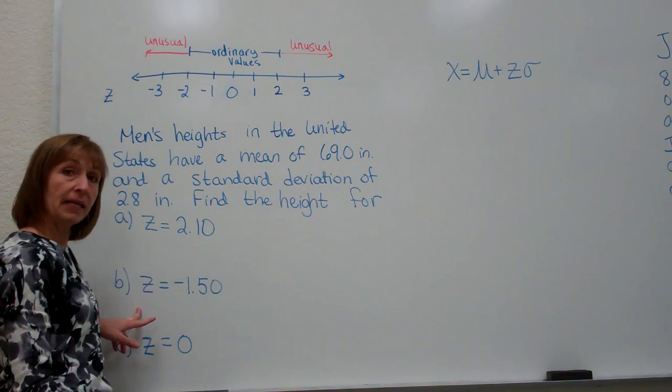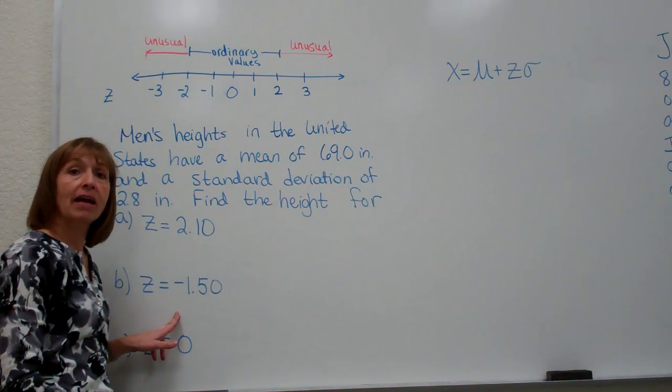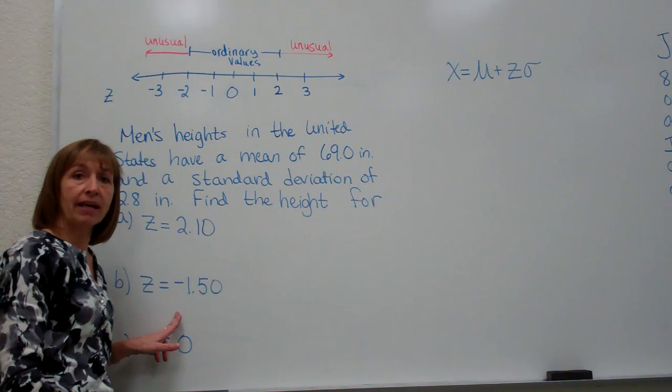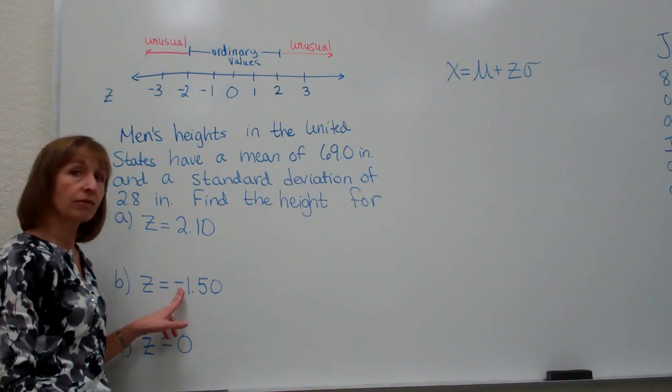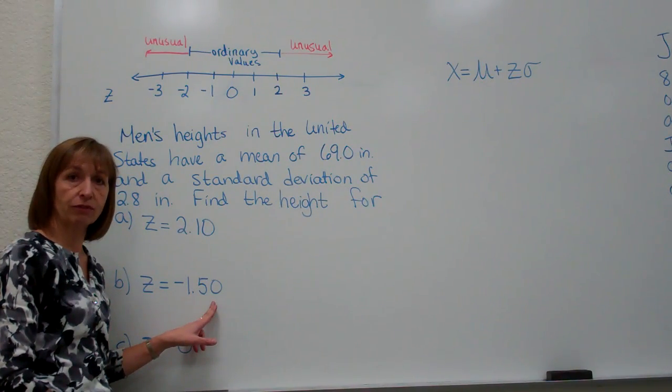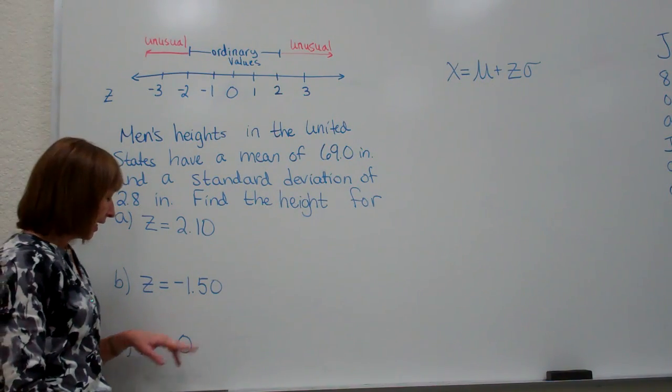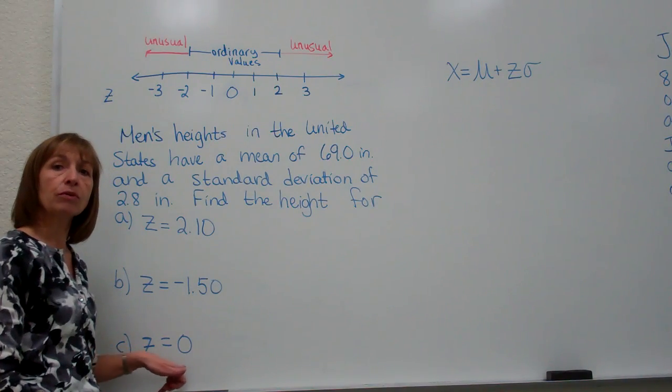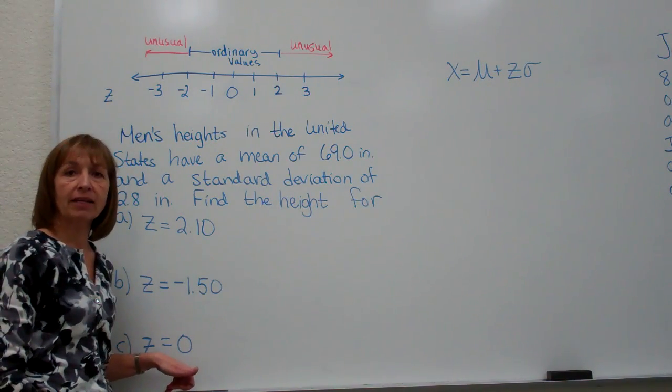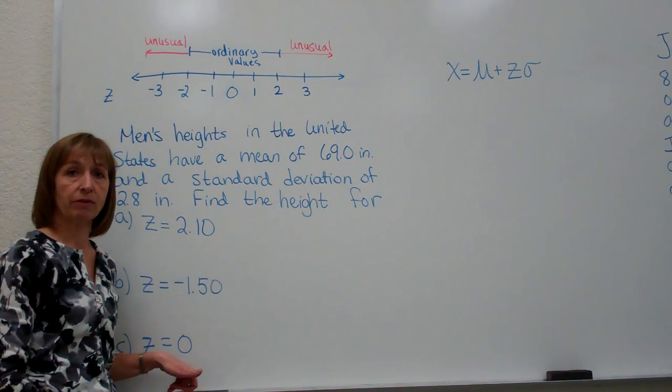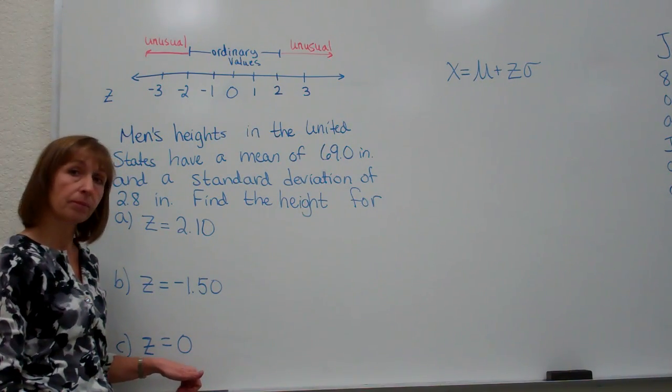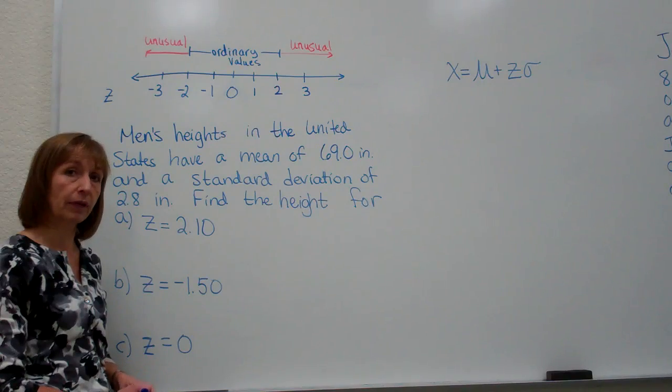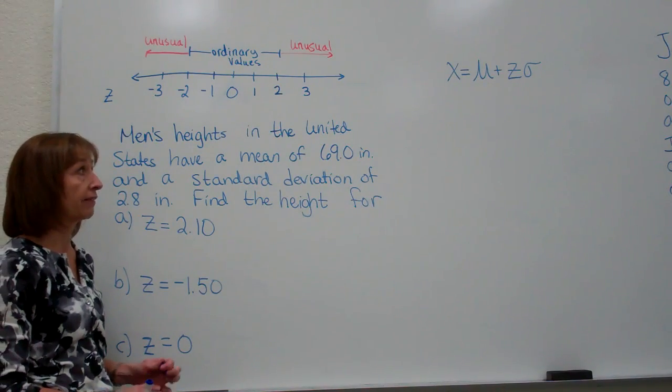For part b when my z-score is negative I know I'm going to get a data value that is smaller than the mean and it's actually smaller than the mean by 1.5 standard deviations for this particular example. And then in part c with a z-score of zero that means my data value is zero standard deviations away from the mean. So I'm actually going to get the mean value for this last part but let's see how that works through when we're working with the formula that they usually give us.